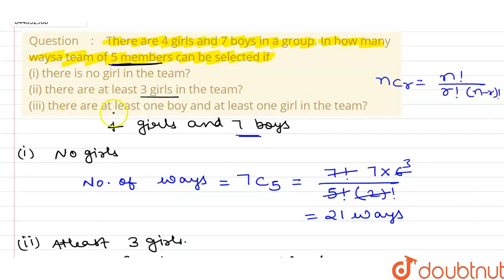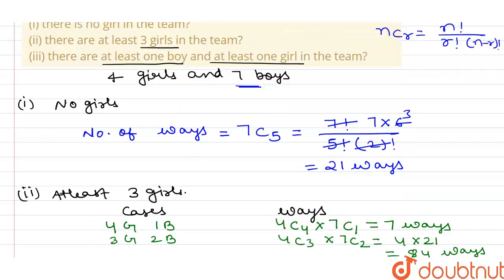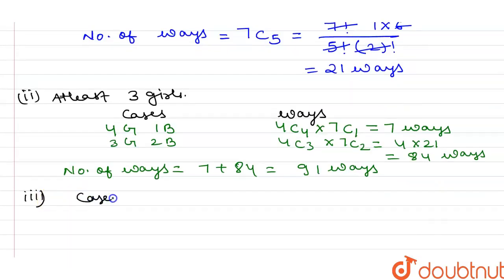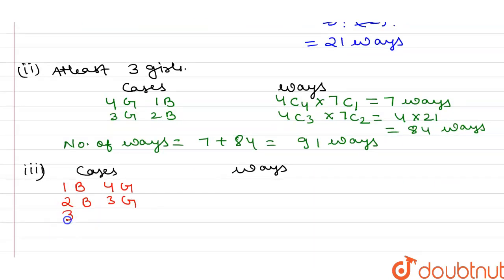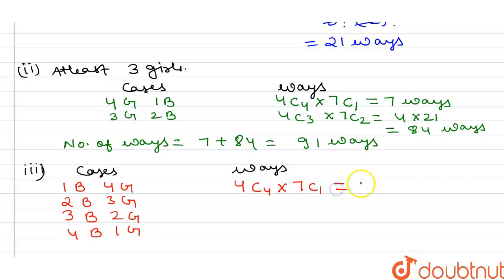The third part is at least one boy and at least one girl in the team. The cases are: one boy and four girls, two boys and three girls, three boys and two girls, and four boys and one girl. For one boy and four girls: 4C4 × 7C1 = 1 × 7 = 7 ways.